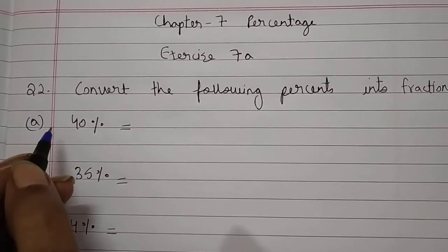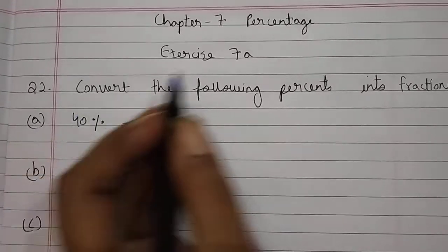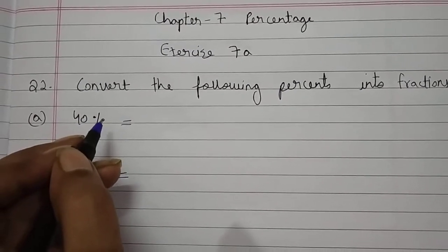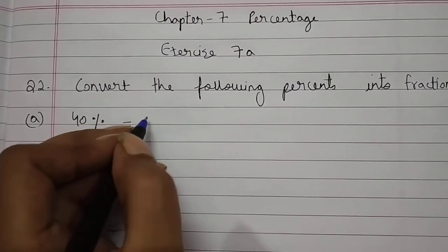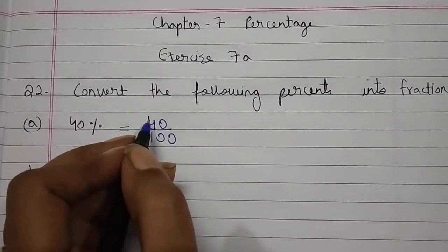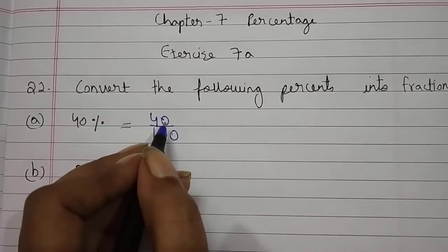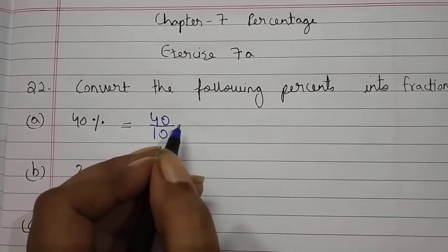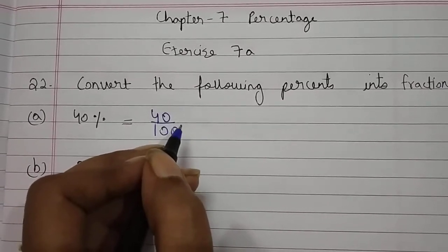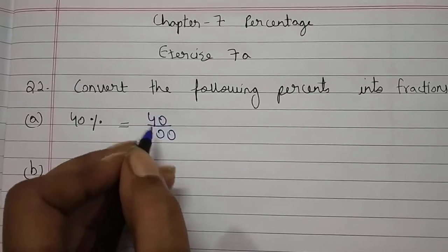Now come to A part. Question is 40%. Students, 40% को हमें fraction में convert करना है. तो इसके लिए हम लोग 40% को divide करेंगे 100 से. So students, 40 divided by 100. Numerator आपको 40 दिया है और denominator आपको 100 दिया है. तो हम लोग numerator और denominator को divide करेंगे common factor से, यानि कि 40 and 100 को divide करेंगे 10 से.